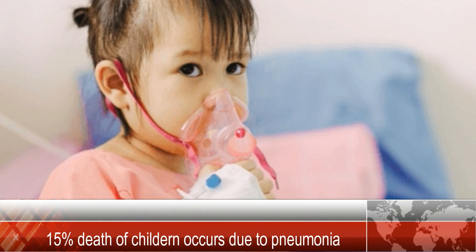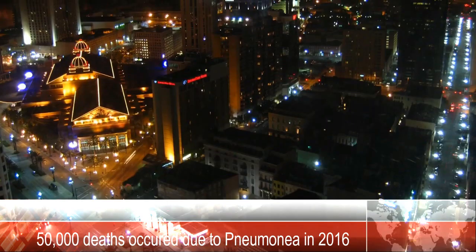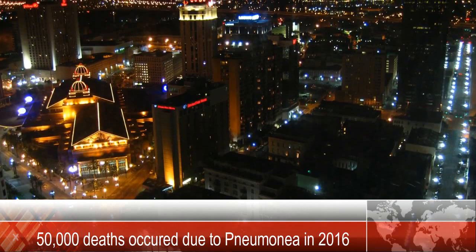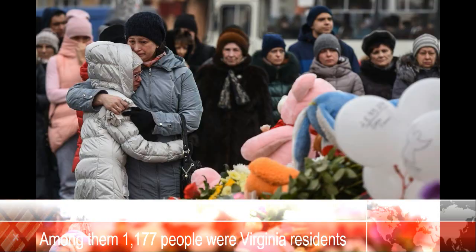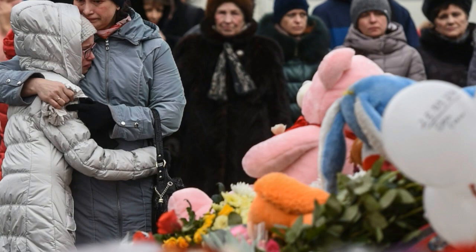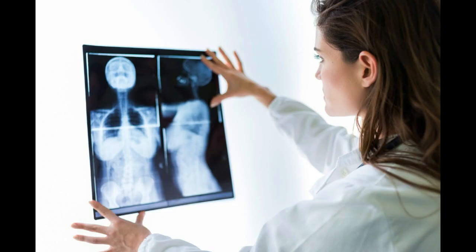Pneumonia accounts for over 15 percent of all deaths of children under five years old internationally. In the United States, over half a million visits to emergency departments and over 50,000 deaths occur due to pneumonia. Recently, the statistics of the number of people who died from pneumonia in Virginia has created a significant concern among Virginia residents.